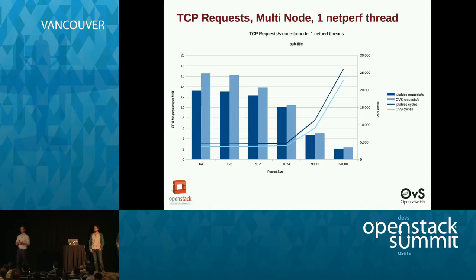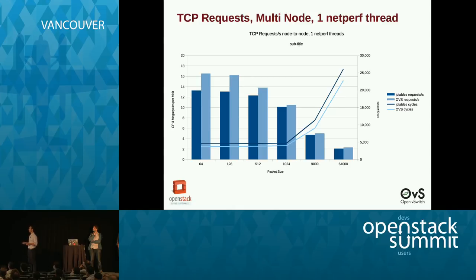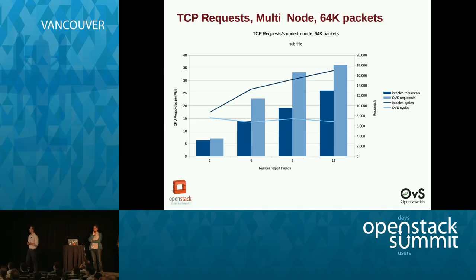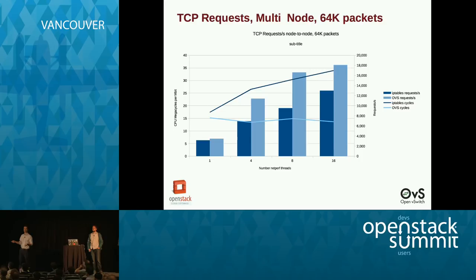For multi-node TCP requests over the NIC, OVS is doing better for all packet sizes. The NIC puts an upper cap on performance. OVS also scales nicely — it uses almost the same number of cycles per request regardless of the number of cores utilized. For the IP tables solution, the number of cycles consumed increases the more cores are used. So the OVS-based solution scales much, much better. In conclusion, both throughput and latency are considerably better than the IP tables solution, except for that single case identified in the multi-threaded local results, which we're still investigating.